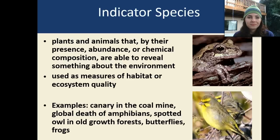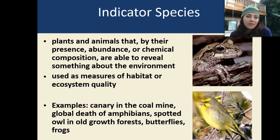Indicator species are species that let us know something's not right — plants and animals that, by their presence, abundance, or even chemical composition, reveal something about the environment that we can't really see. They're used as measures of habitat or ecosystem quality. Examples include canaries in coal mines, the global decline of amphibians, the spotted owl in old-growth forests, as well as butterflies and frogs.